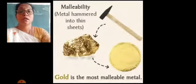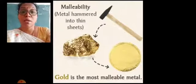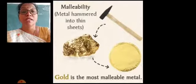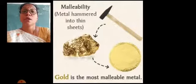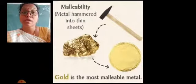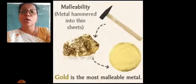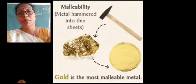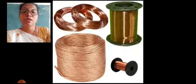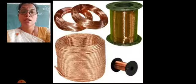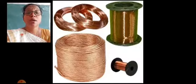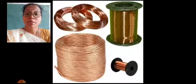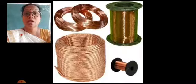The next property we are going to study is malleability and ductility. In malleability, a metal is hammered into thin sheets. When we hammer a metal — whether it is gold, silver, copper, or aluminium — it is changed into very thin sheets. That property is called malleability. Gold is the most malleable metal. Ductility is the property by which metals can be drawn into very thin wires. Copper wire is a good example. Gold, aluminium, copper, and iron are all ductile metals that can be changed into wires.